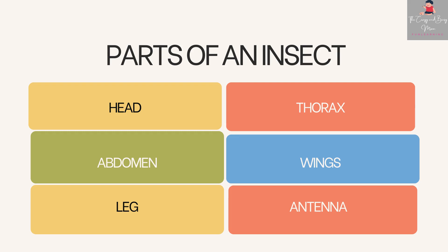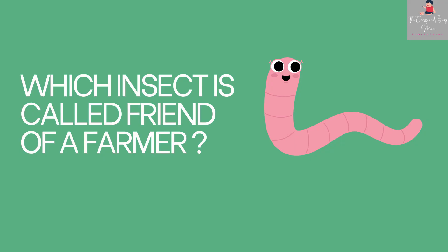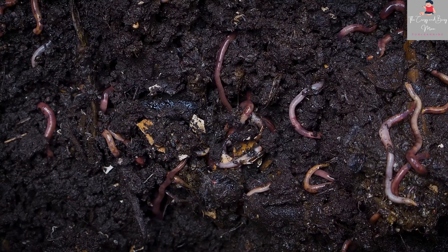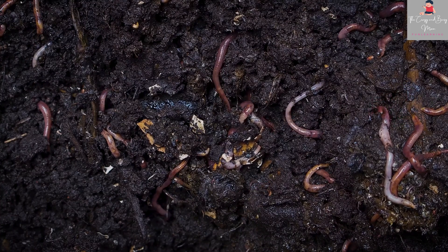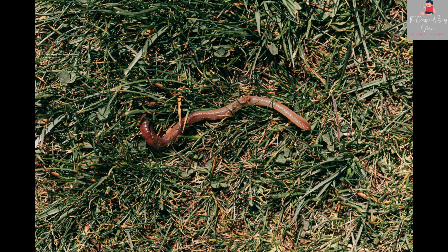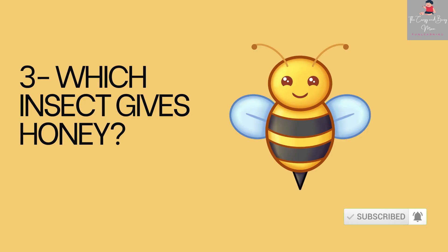Here you can see the pictures. Which insect is called the friend of a farmer? Which insect gives honey? The answer is honeybee.